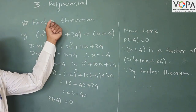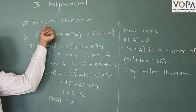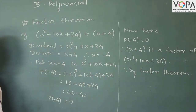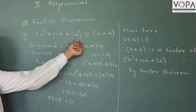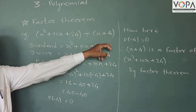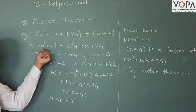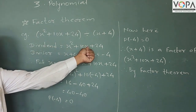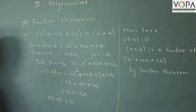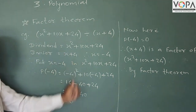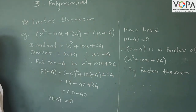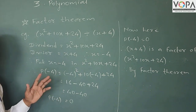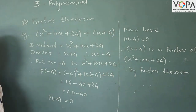Dear students, in this example of the factor theorem, we have x² + 10x + 24 divided by x + 4. Here the dividend is x² + 10x + 24 and the divisor is x + 4. Now put x equal to minus 4 and find the remainder by the remainder theorem.